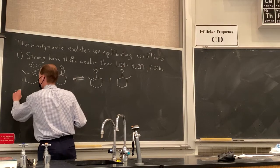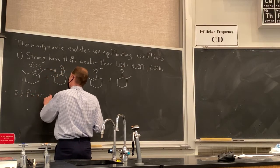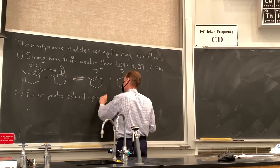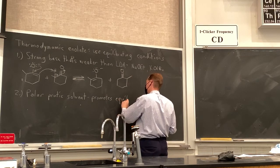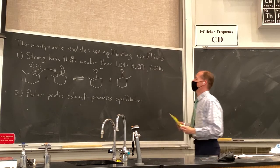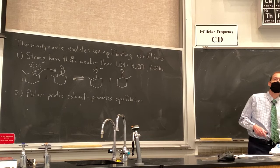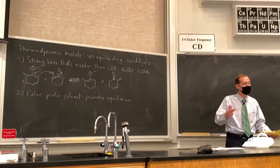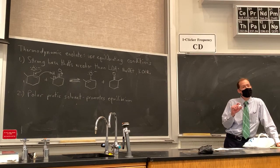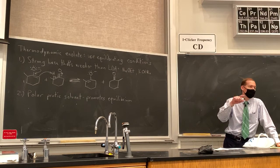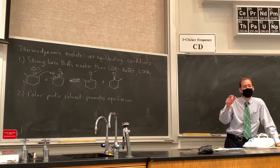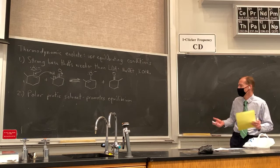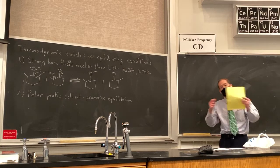The second point: we want to use a polar protic solvent because it can also promote equilibration. A polar protic solvent would protonate the enolate in an acid-base reaction, accelerating the equilibrium between enolate and ketone. That equilibrium favors the ketone, but the faster you reach equilibrium, the more of the thermodynamic enolate you'll have of that small percentage that is enolate. So it promotes equilibrium by converting the enolate back into the ketone.